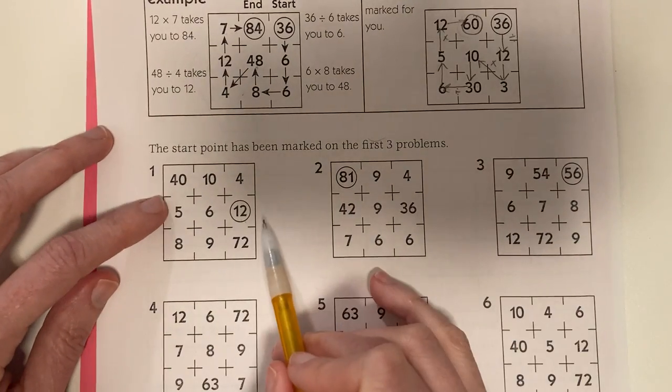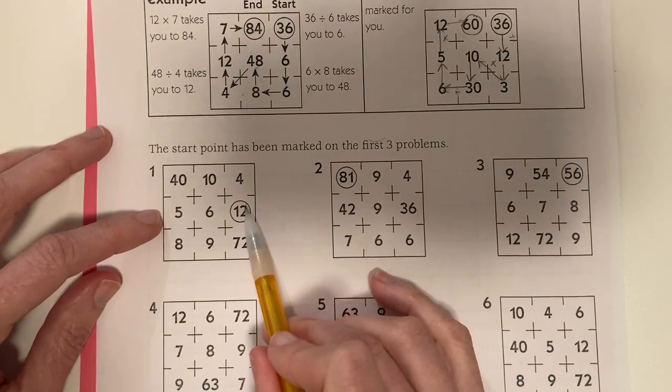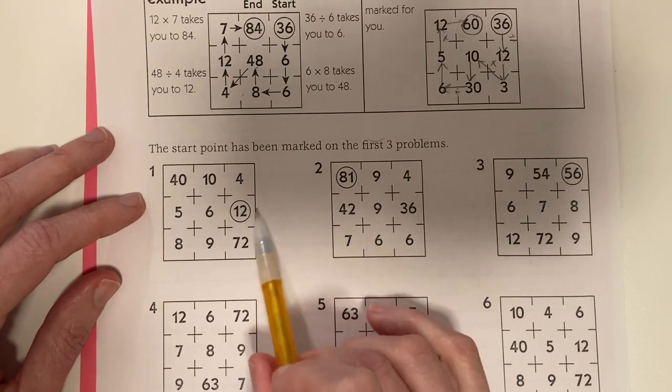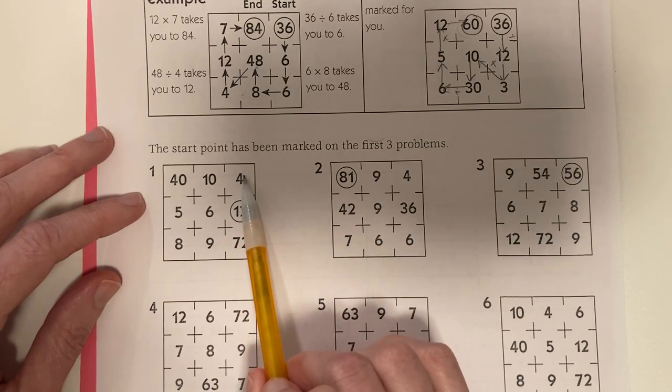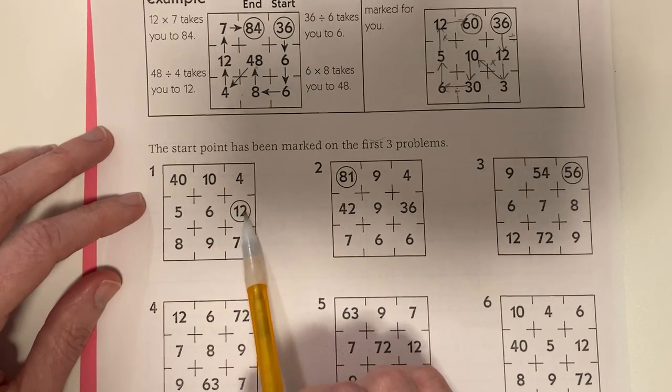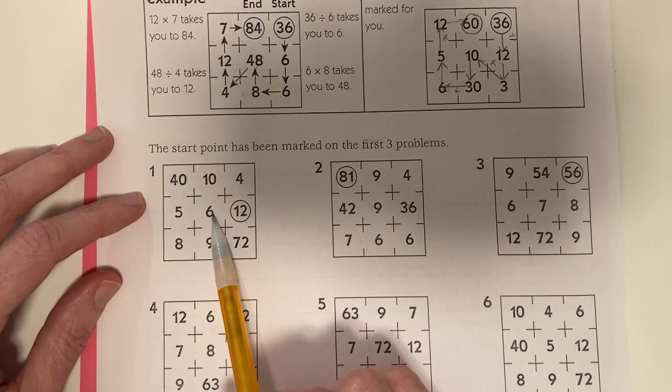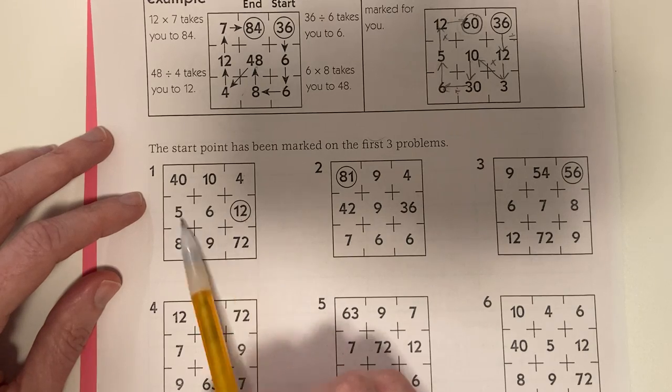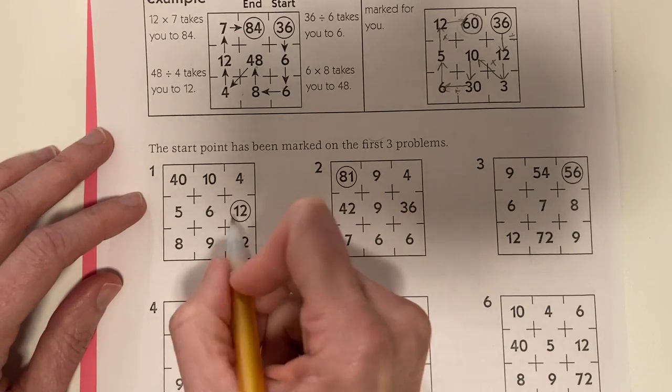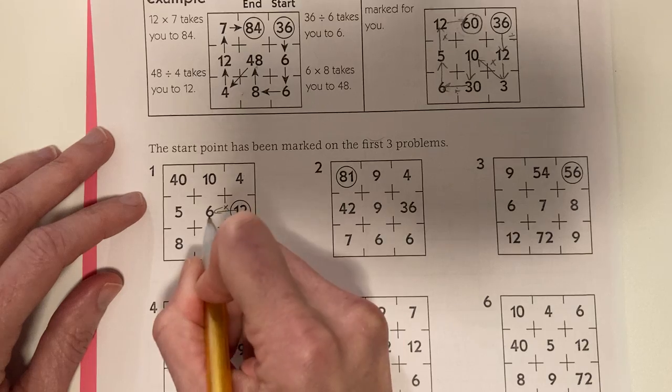Now, in this top row, the start is set for you with the circle, 12. Well, I know I can do 12 divided by 4 is 3, but I don't see 3. And 12 divided by 6 is 2, but I don't see a 2. So I can do 12 times 6, which is 72.